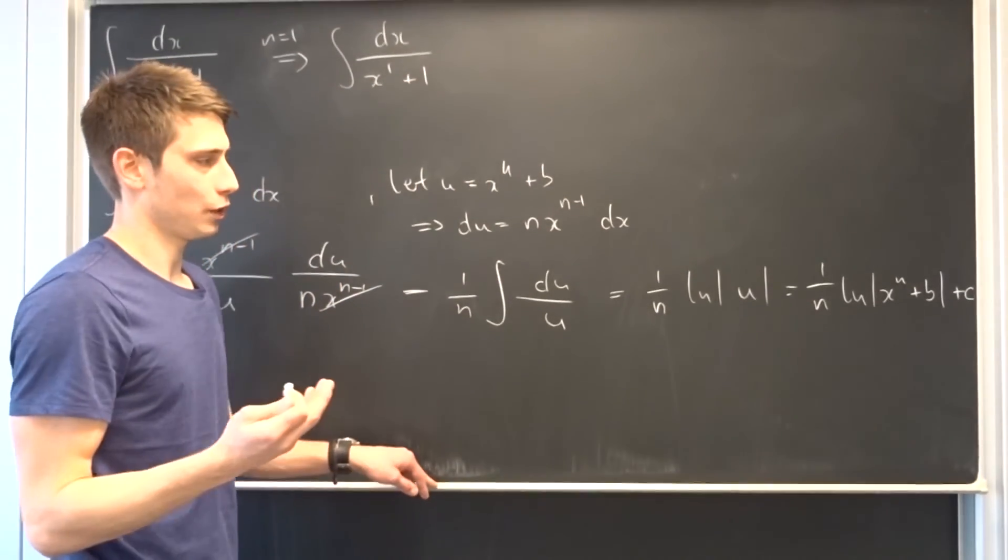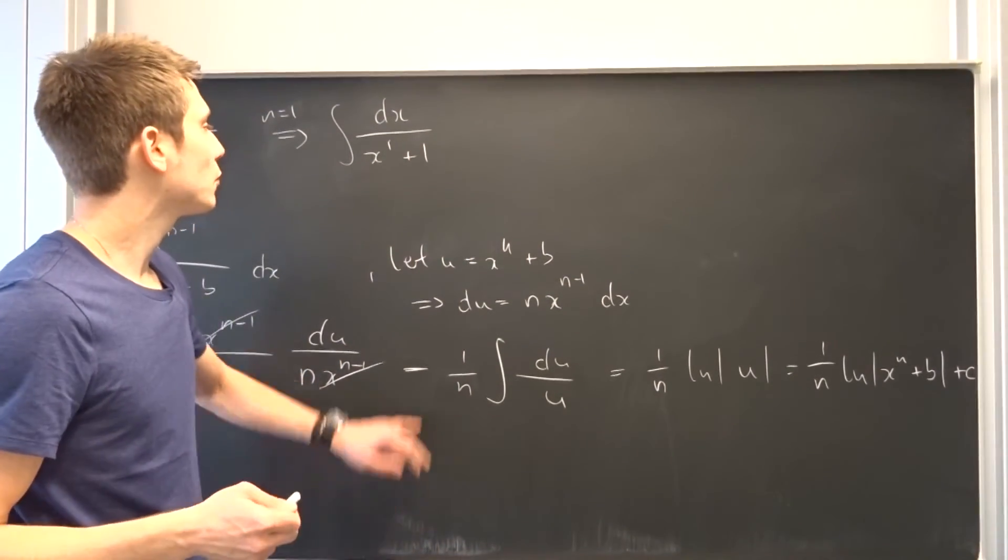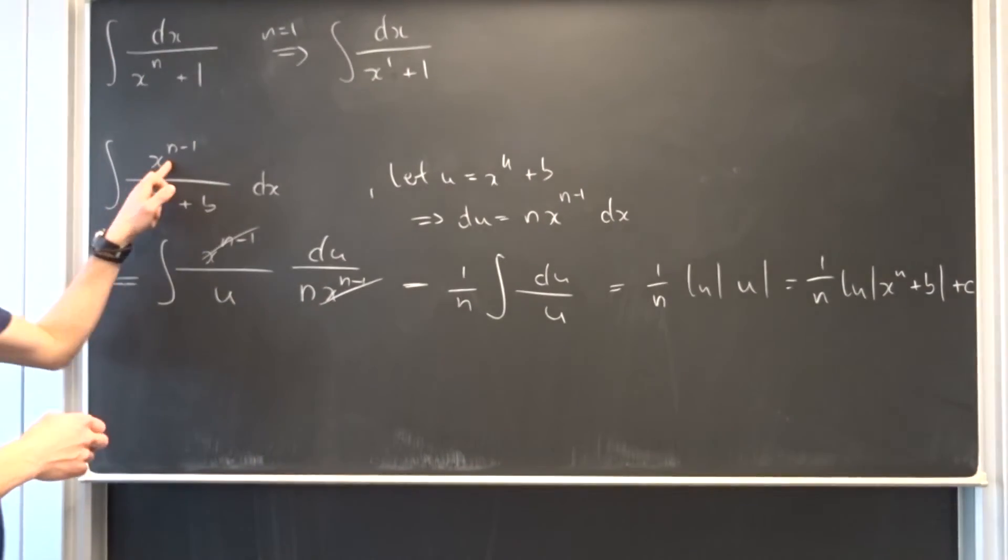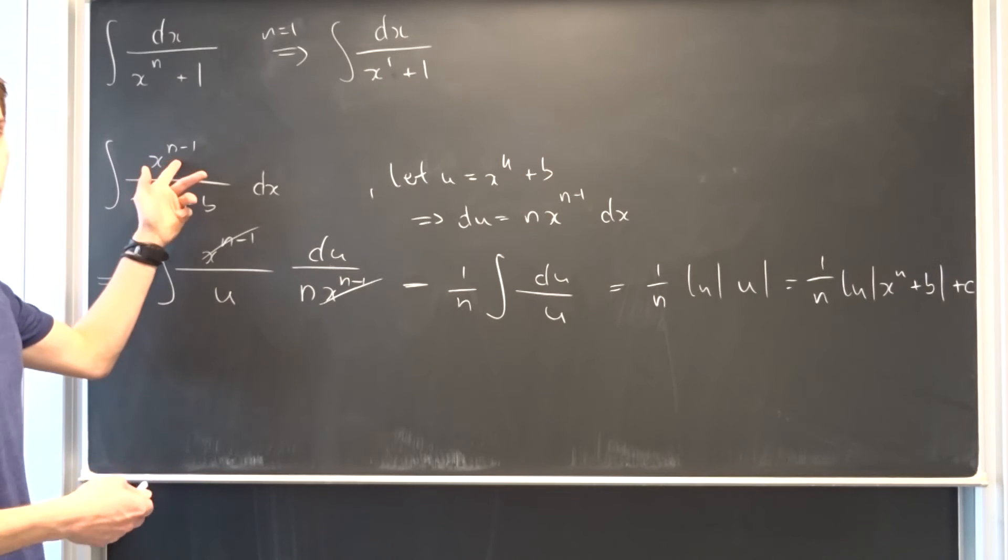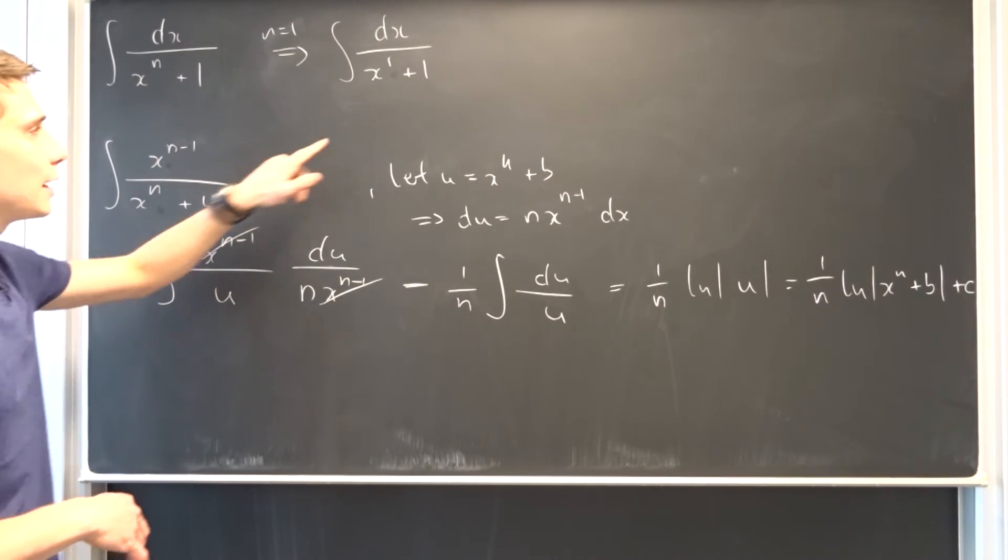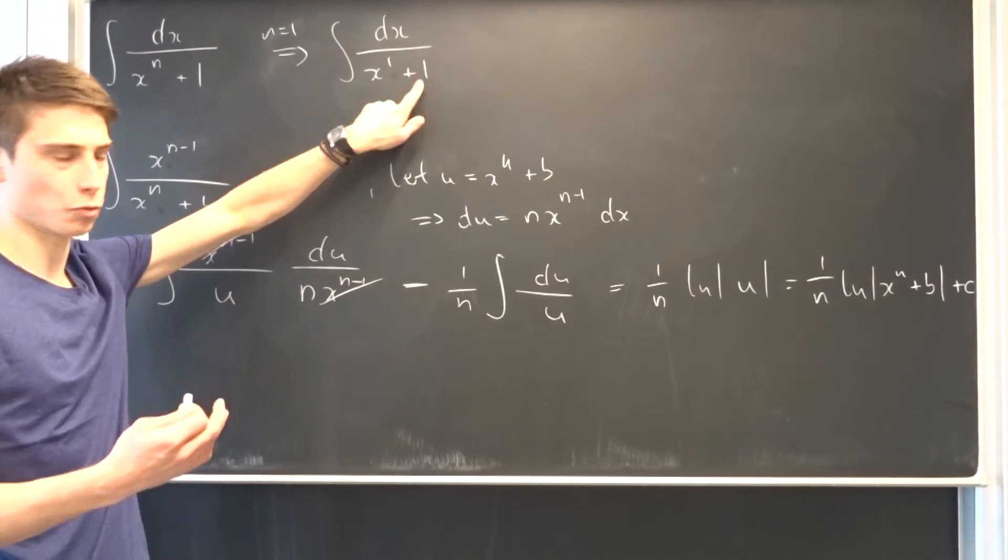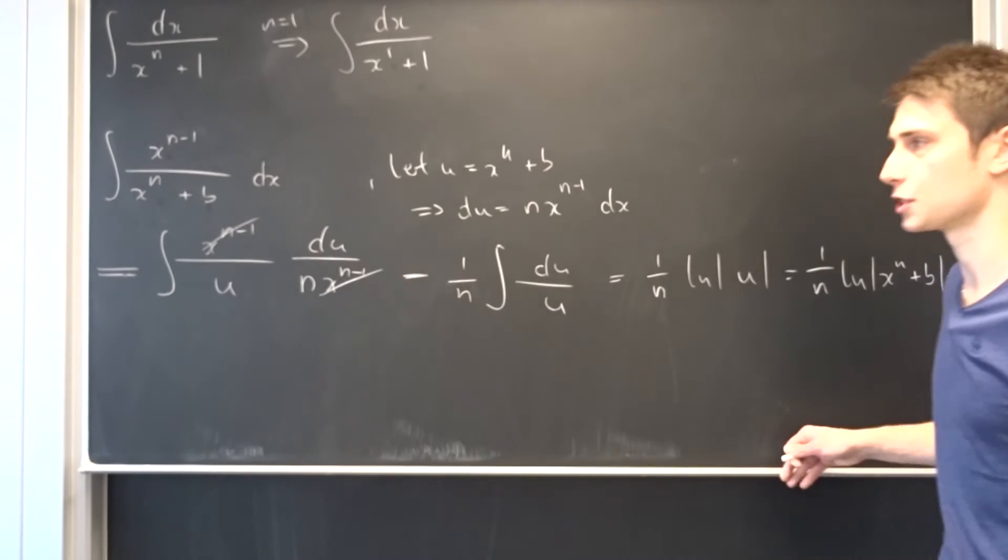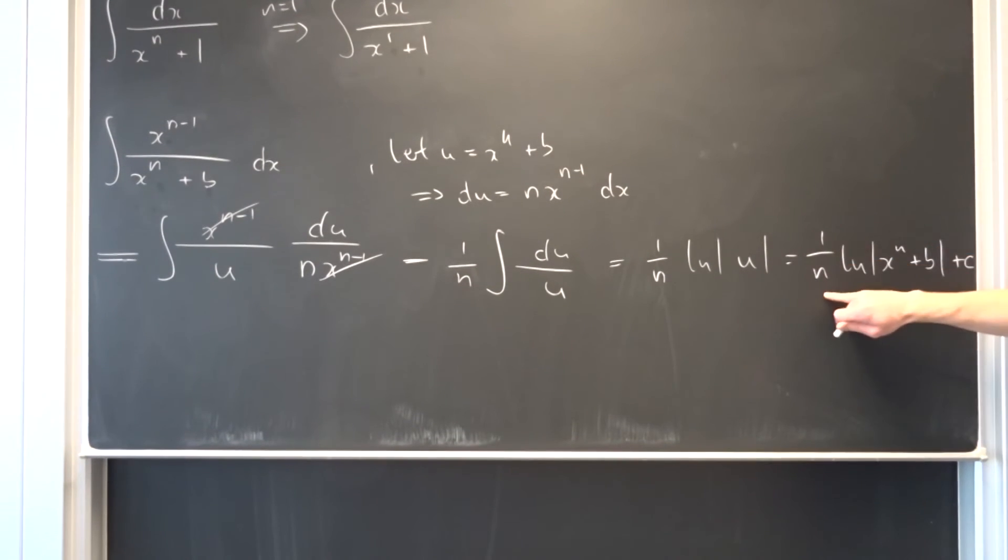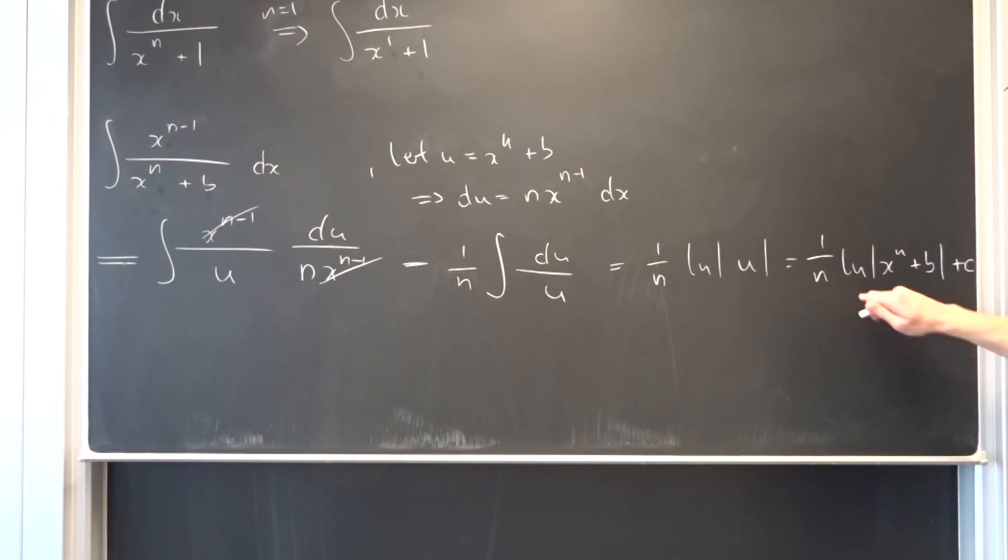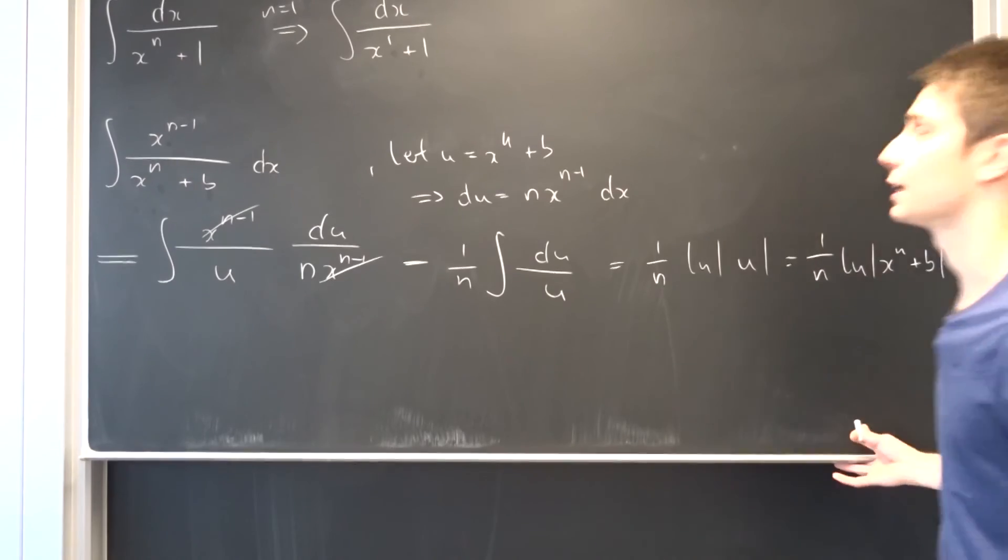Now we can plug all of our initial conditions in. So n has to equal 1. So if we plug this in, that's x to the 0 power, so that's a 1 right here. That's nice, and it's x to the first power. And also B has to equal to 1, so B is 1. And we know what the solution to this integral is. This is just 1 over n, and n equals to 1, so that's just 1 times the ln of x to the first power plus 1, and then we are done.